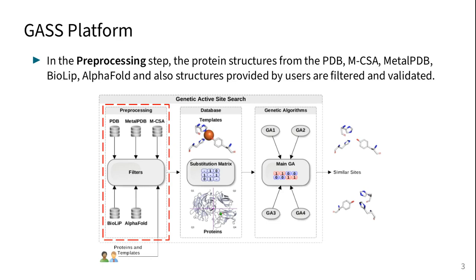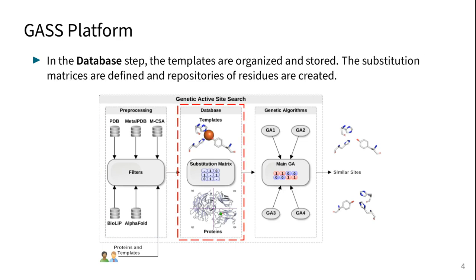GAS is divided in two steps. In the pre-processing step, the protein structures from different databases and also structures provided by users are filtered and validated. In the database step, the templates are organized and stored. The substitution matrix to deal with conservative mutations are defined and repositories of residues are created.